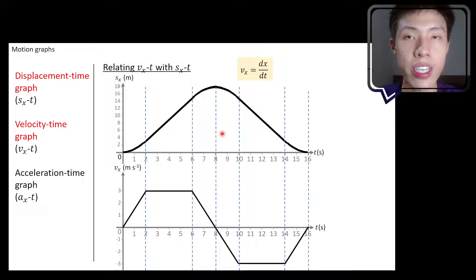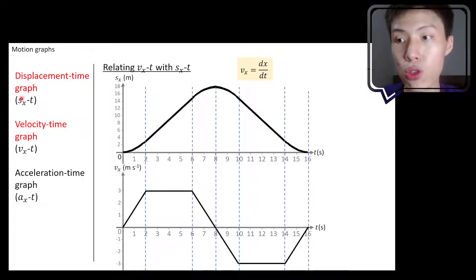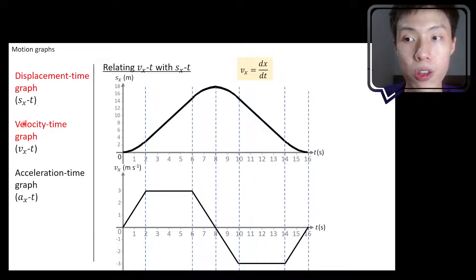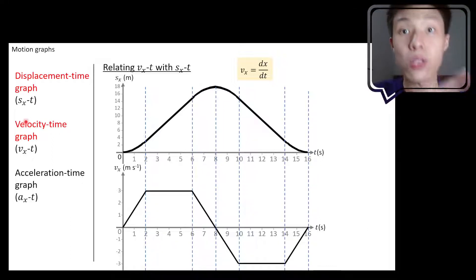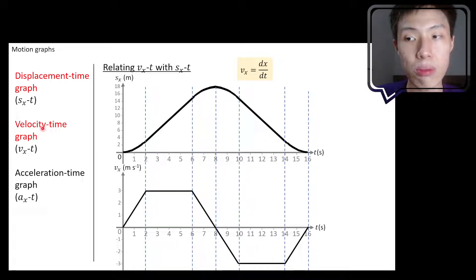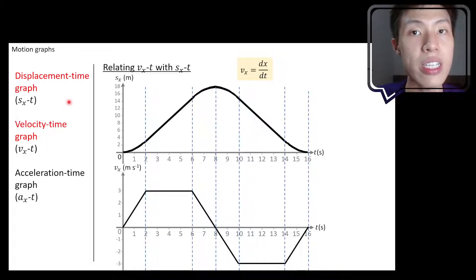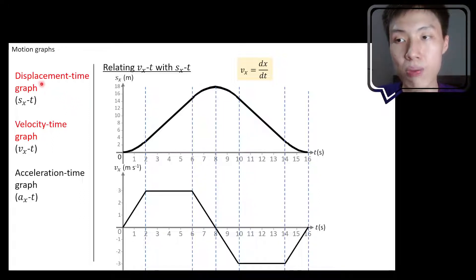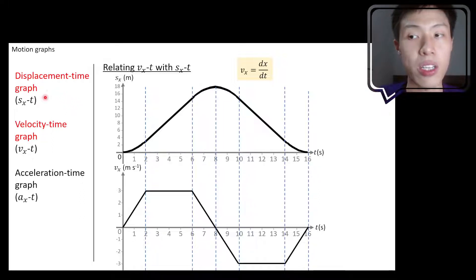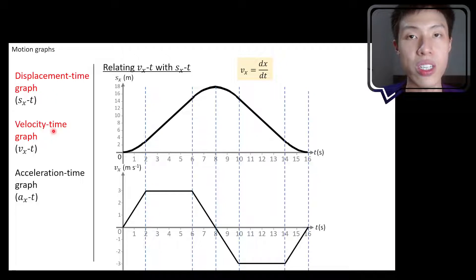In the previous video, we learned that by getting the gradient of a displacement-time graph, we are able to determine the value of the velocity in the velocity-time graph. Now, are we able to do something the other way around? Are we able to determine something from a velocity-time graph in order to relate to the displacement-time graph? Well, you can. We get from the displacement-time graph to the velocity-time graph using the gradient, but in order to get from the velocity-time graph to the displacement, we actually need something called the area under the graph.